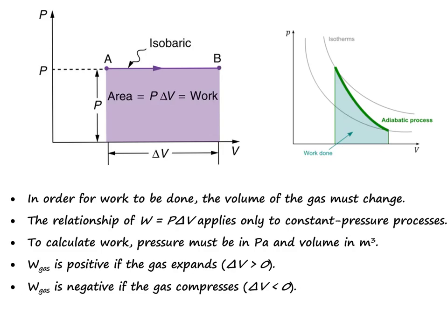It also shows us some really important points that we need to understand. First, in order for work to be done, the volume of the gas has to change. So in an isochoric process where our volume never changes and our PV diagram is just going to be a vertical line, right, no work is done in an isochoric process. This is no mechanical work. There's still a heat energy transfer but no mechanical work is done.